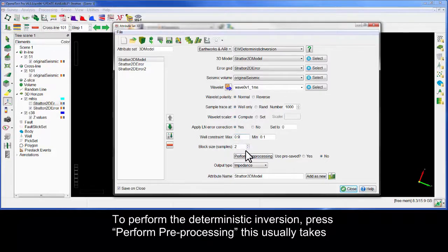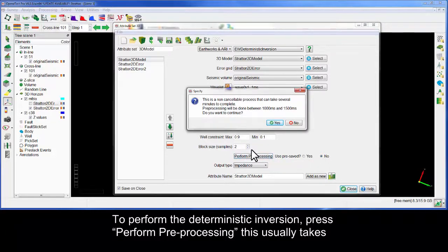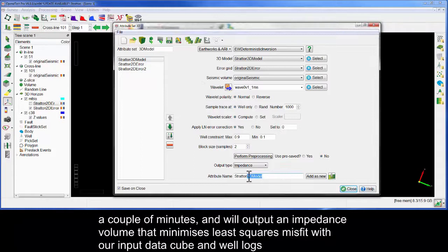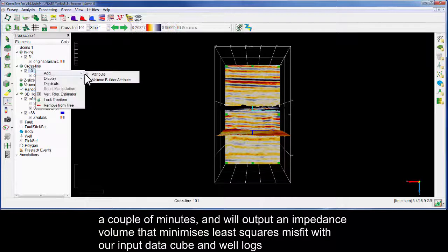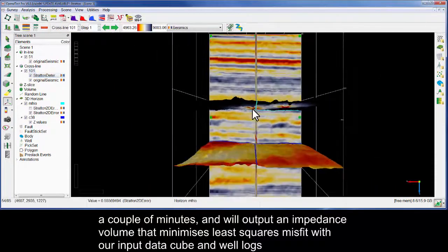To perform the deterministic inversion, press Perform preprocessing. This usually takes a couple of minutes and will output an impedance volume that minimizes least squares misfit with our input data cube and well logs.